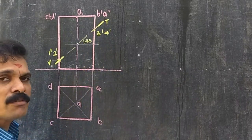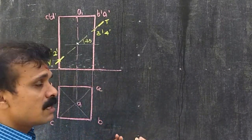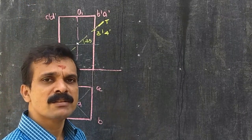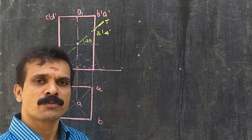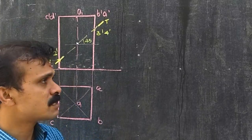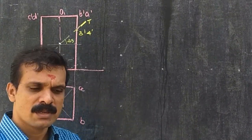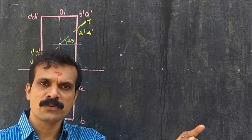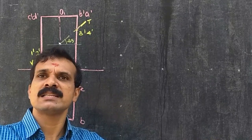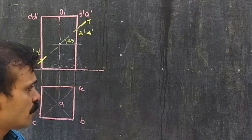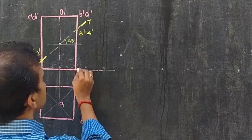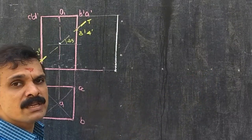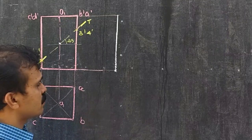Now we have to develop the lateral surface of the lower portion of the solid. Since this is a square prism, the development of the lateral surface will be a rectangle having the length of its perimeter as its base and height equal to the height of the prism. The length will be four times 30 — that is the perimeter — so take 30 mm intervals.